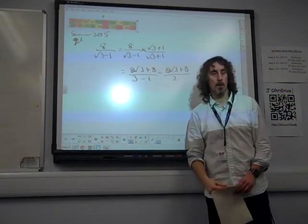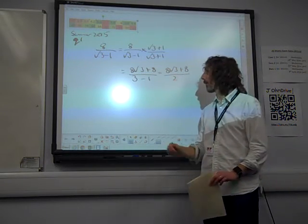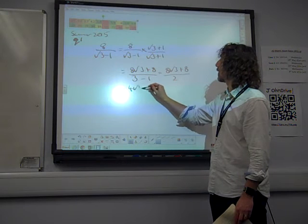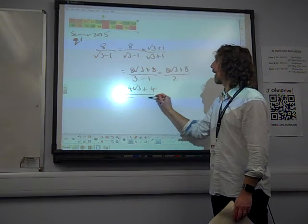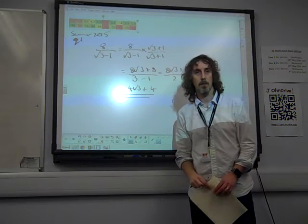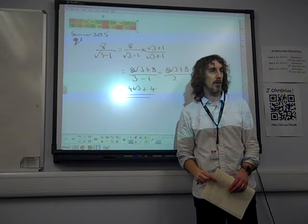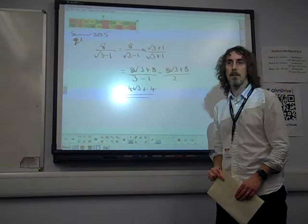So we've got 8 root 3 plus 8 over 2. We're dividing all at the top by 2. And so we get 4 root 3 plus 4. And there's our answer for the three marks. Which is great, isn't it? Very happy about that.